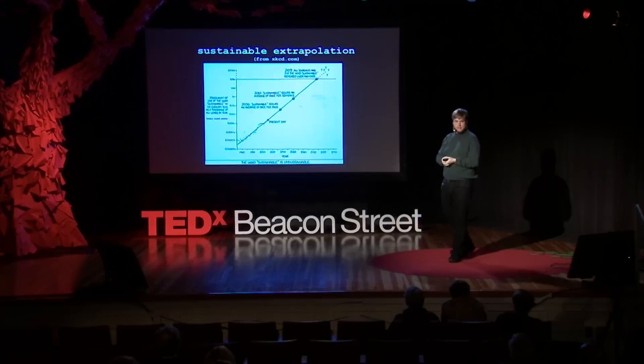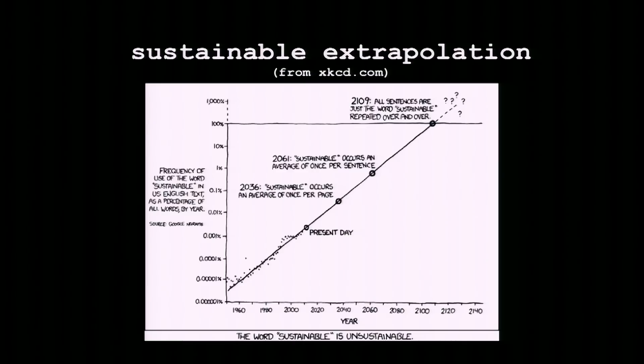Our friend Randall Munroe of XKCD took our data and looked at the word 'sustainable,' which is on an exponential growth path — this is a log plot. He noticed that in a mere 25 years we're going to have 'sustainable' on average on every page of a book, and in 50 years on every sentence. In less than 100 years, books will simply be the word 'sustainable' repeated over and over. Of course, this is humor — but the trend is real. The notion of using data to predict the future is genuine, even if extreme extrapolation doesn't work.